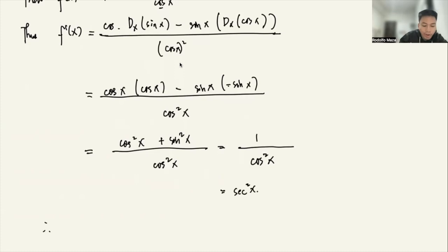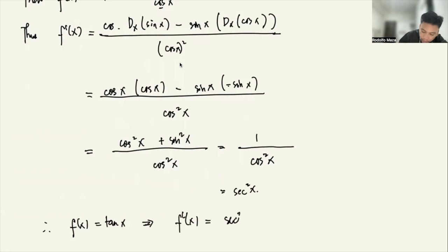Therefore, if f(x) = tangent x, then f'(x) = secant squared x. That's it.